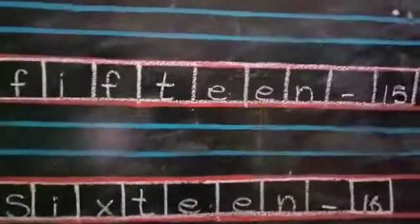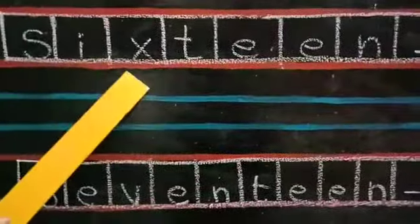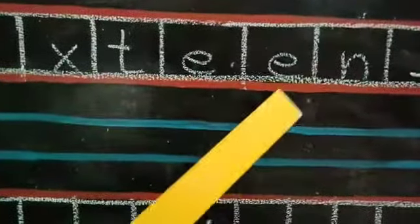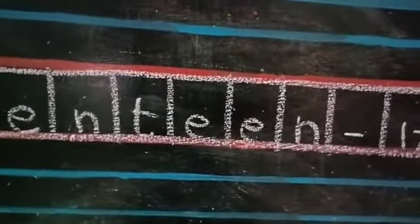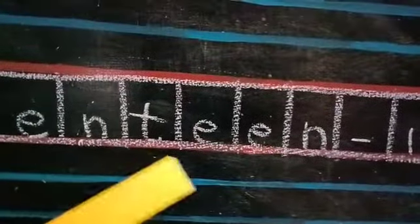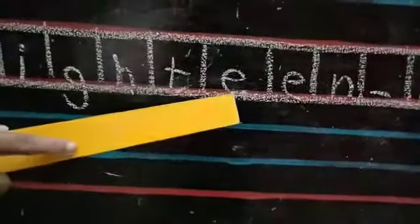Shall we revise again? F-I-F, fifth. T-E-E-N, teen. Fifteen, 1-5. Sixteen: S-I-X, join teen spelling T-E-E-N. Teen. 1-6, sixteen. Seventeen: S-E-V-E-N, seven, join teen spelling T-E-E-N. Teen. 1-7, seventeen. Eighteen: E-I-G-H-T, eight. While joining teen spelling, remove T and write only E-E-N. Eighteen. 1-8, eighteen.